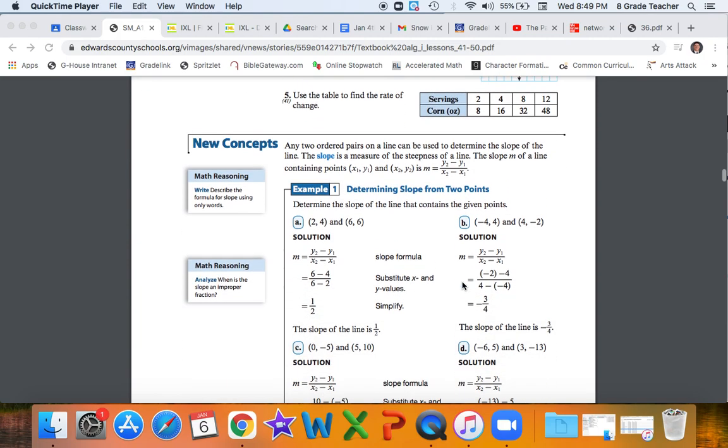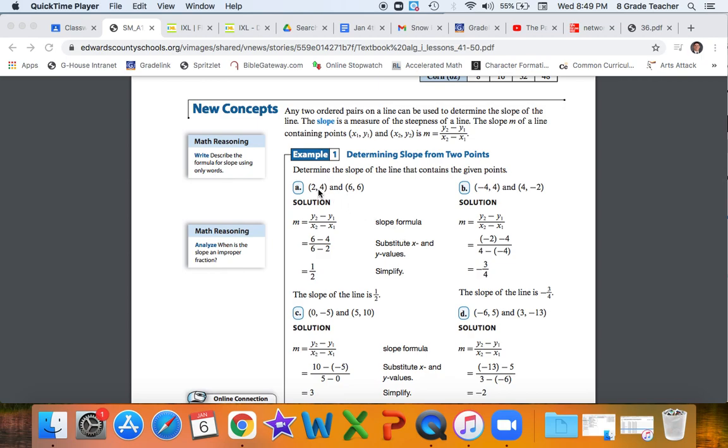So here's an example in example one. You've got line point (2, 4) and (6, 6). You put that into the y2 minus y1 formula, x2 minus x1. So you take the last number and this would be 6 minus 4 and then 6 minus 2. Write that out then subtract it. Six minus four is two.